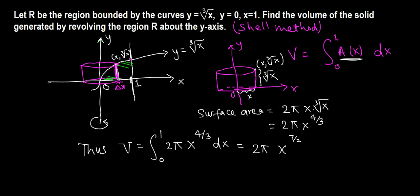We can pull the constant outside. Finding the antiderivative of x^(4/3) using the power rule: x^(4/3 + 1) = x^(7/3) divided by 7/3, evaluated from 0 to 1.